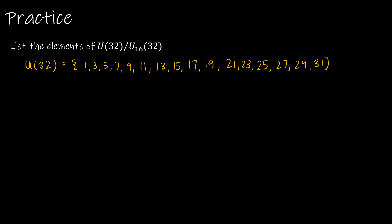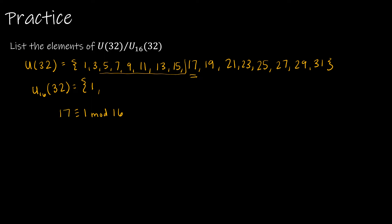U16(32) means we're looking for elements in U32 that result in 1 mod 16. That's going to give us 1, and then 17, because 17 is congruent to 1 mod 16. So U16(32) gives us {1, 17}.